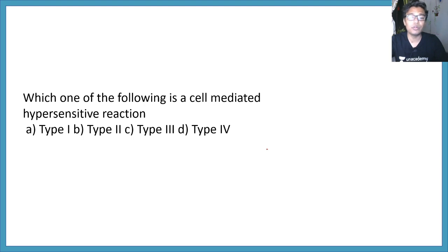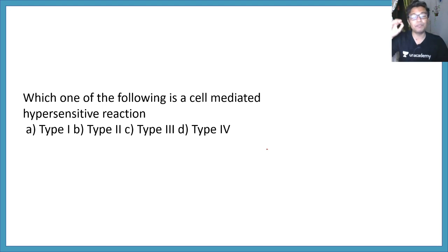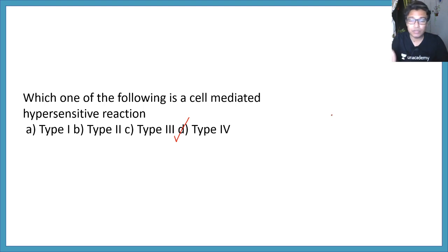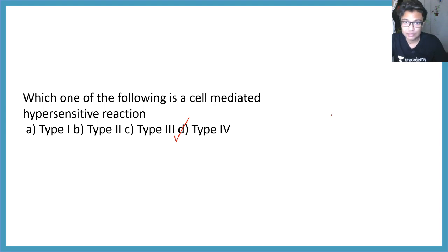Which one of the following is a cell-mediated hypersensitivity reaction? This is again very important because many times they have asked this question. The answer is type 4 delayed hypersensitivity, which does not involve antigen-antibody-mediated responses. It involves T-cells — specifically TH1 cells — and this is really important.